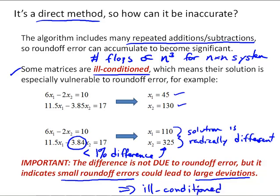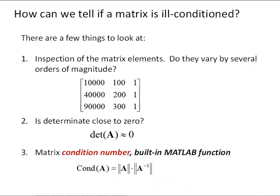So let's talk a little bit more about how can we tell if a matrix is ill-conditioned. Well, there are a few things that we can look at. First of all, we can just look at the matrix elements. Do they vary by several orders of magnitude?